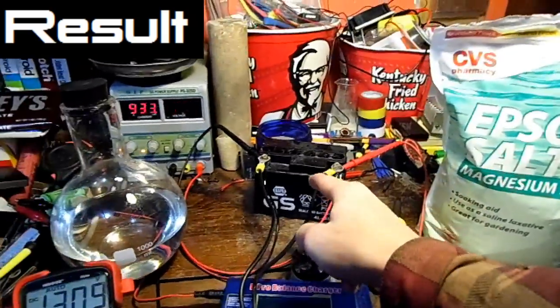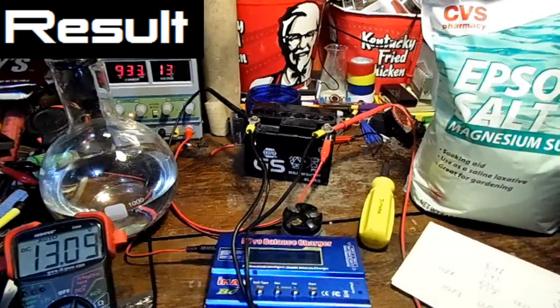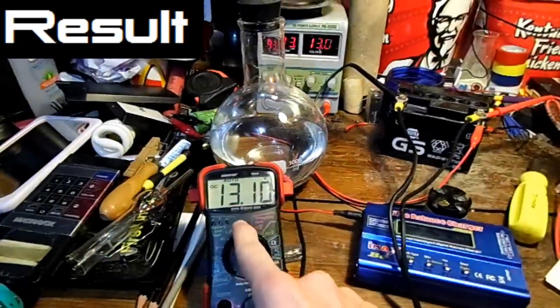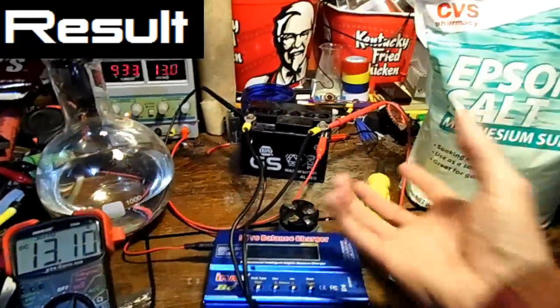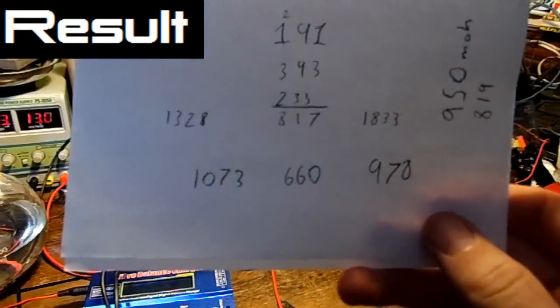Adding Epsom salt to a dead lead acid battery does not desulfate the plates or increase the amp hour capacity, but it does increase the voltage and allow you to pull more amperage from the battery, which is great for starting a vehicle. I've done the tests and come to this conclusion. Here's how.